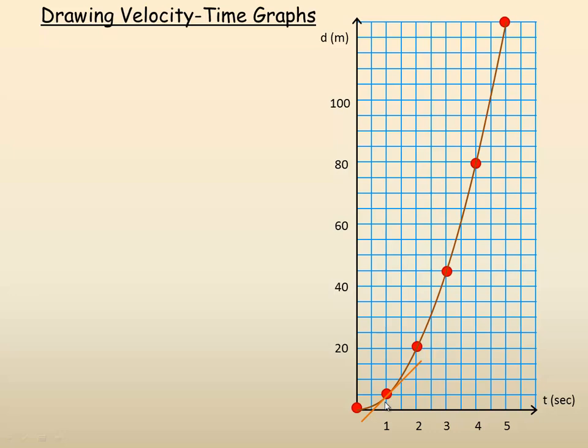What we would do is take the graph and draw tangent lines at several different times in the graph. It's convenient to choose, for example, 1 second, 2 seconds, 3 seconds, etc. So I'm drawing tangents for all these. A tangent is a line that just touches the curve in one place.